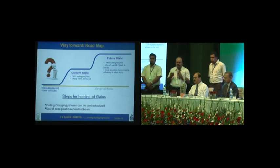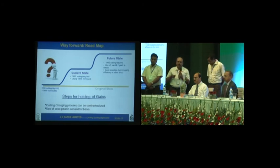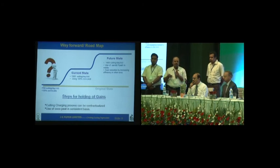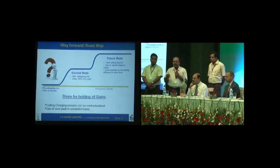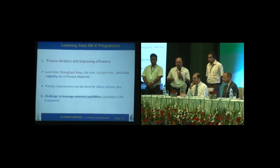This is our roadmap. Earlier we were thinking about how to increase efficiency and how to substitute vermiculite. Now the scenario has changed: the current state is 1,300 cuttings per day and we are using 100 percent coco peat. In future, we can go up to 1,400 cuttings and use sand and fly ash available from our paper industry, further reducing cost. This cost reduction approach is also applicable to other activities. Next steps include contractualizing the job and using coco peat on a consistent basis.